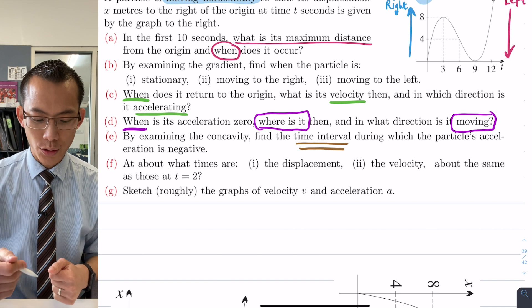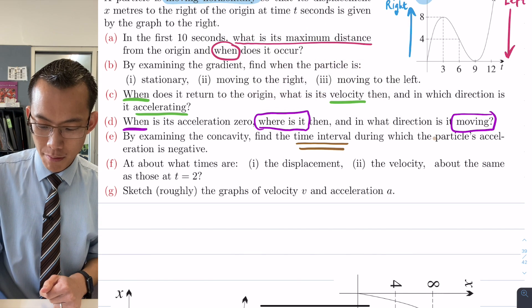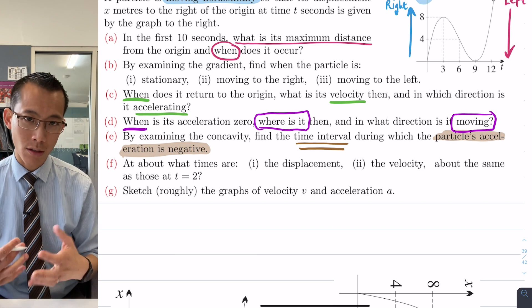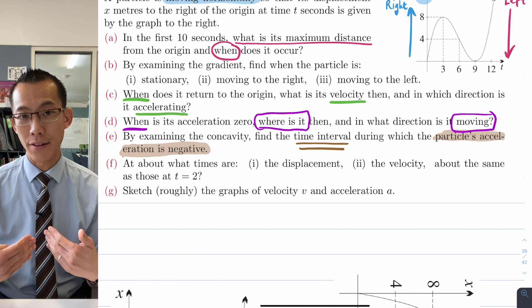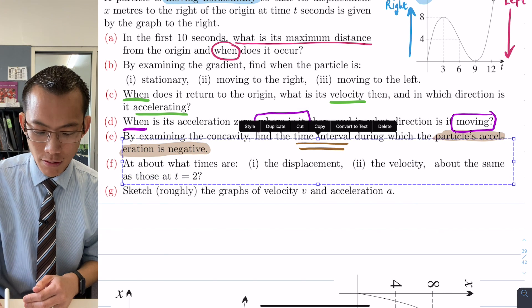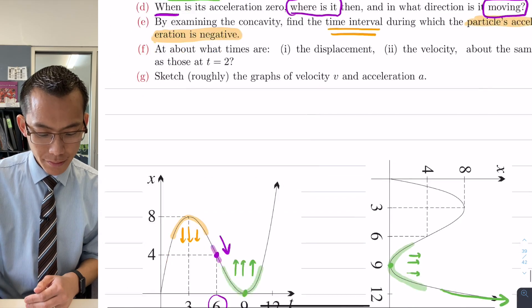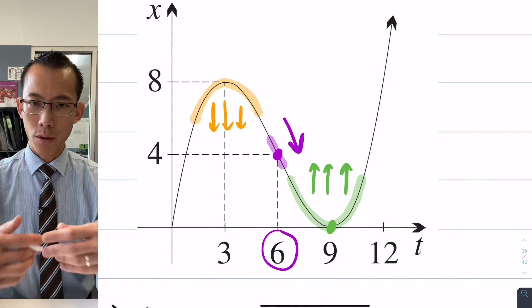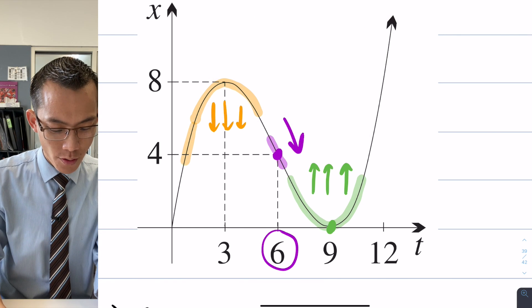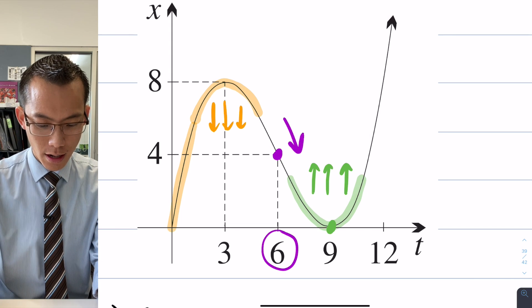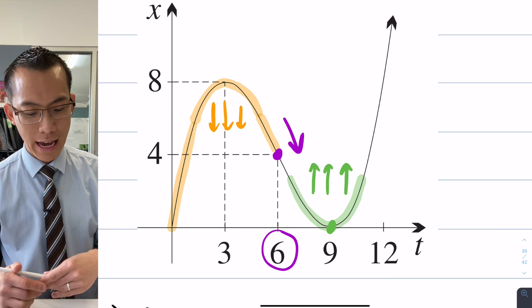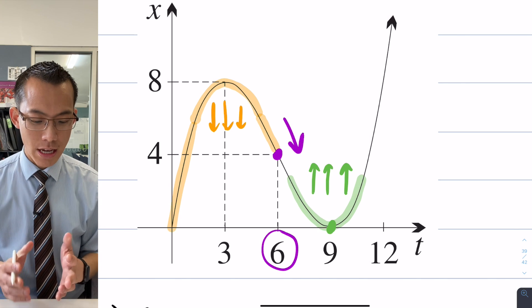Find the time interval during which the particle's acceleration is negative. Since this corresponds to concavity, we're thinking about when is the graph concave down. Now I chose brown, but I've actually used orange already to describe part of this. If you have a look, I started to look at this section over on the left where it was concave down, so I can just continue that work and that will complete my answer. So if I continue over here, this part here, and then the orange section continues to here until we reach that point of inflection, which is where there is zero concavity. This entire orange section is concave down.